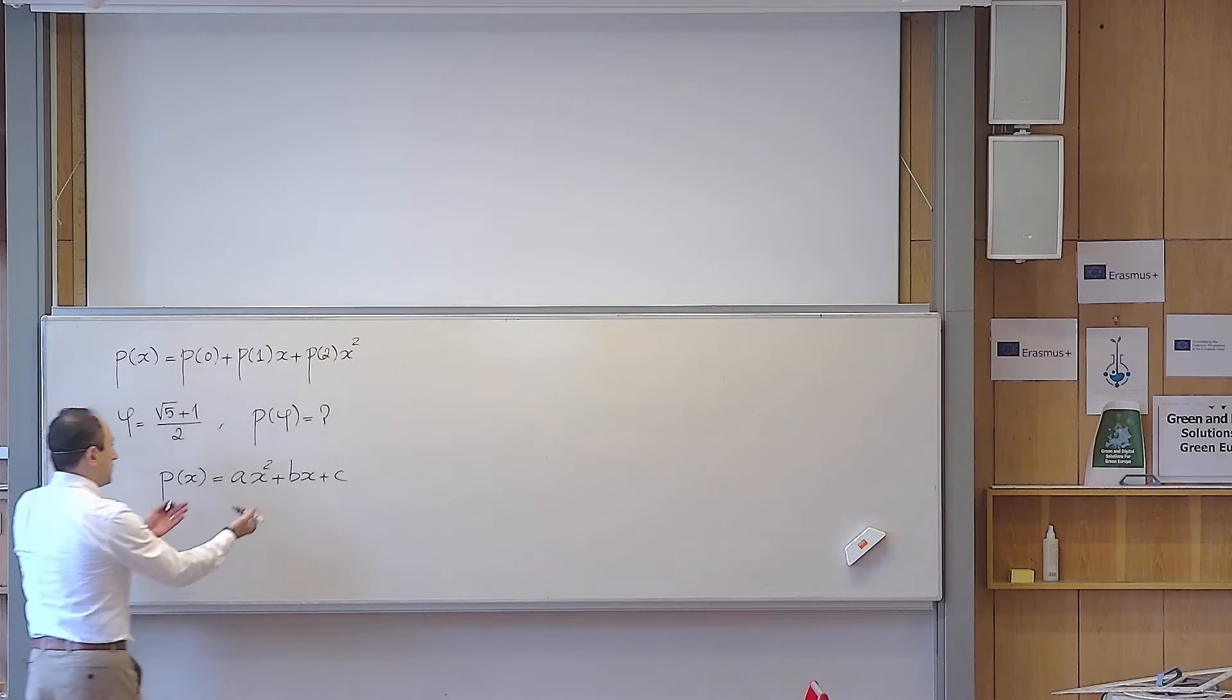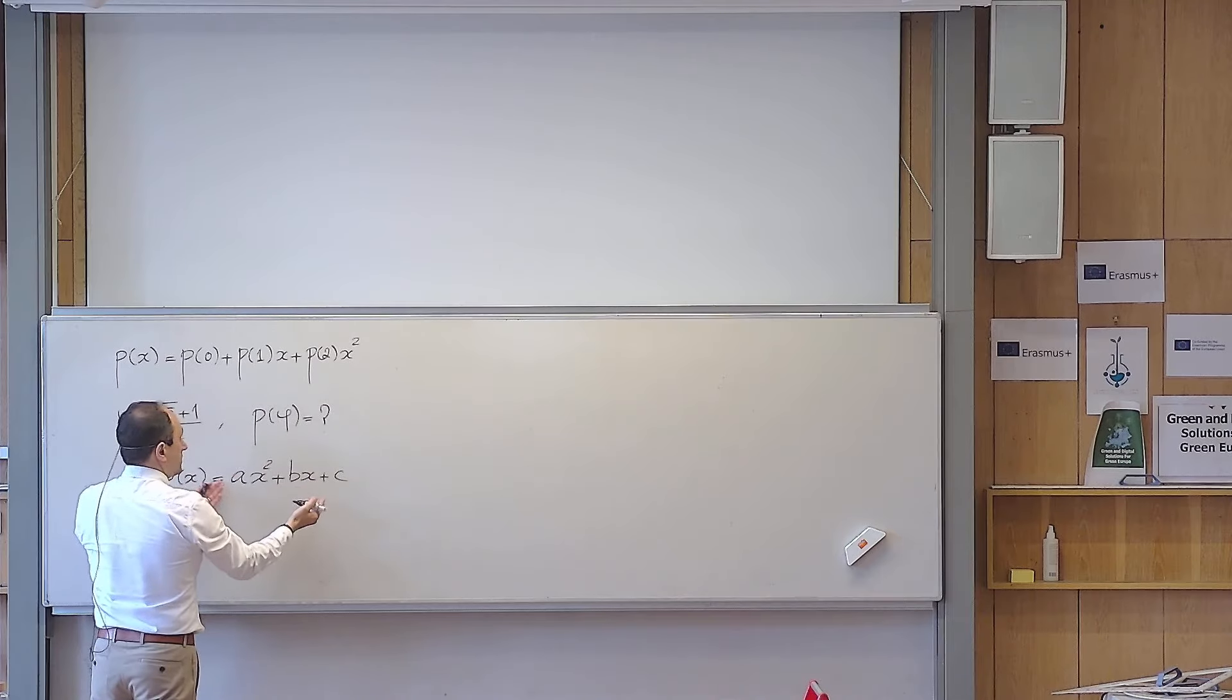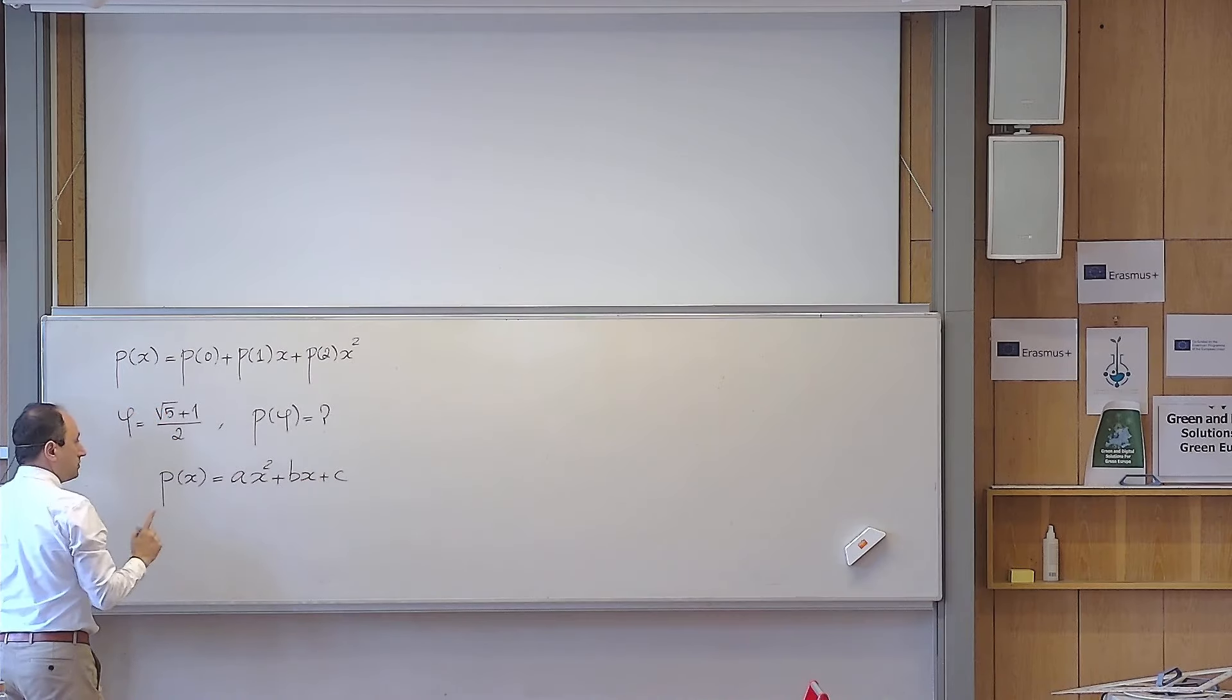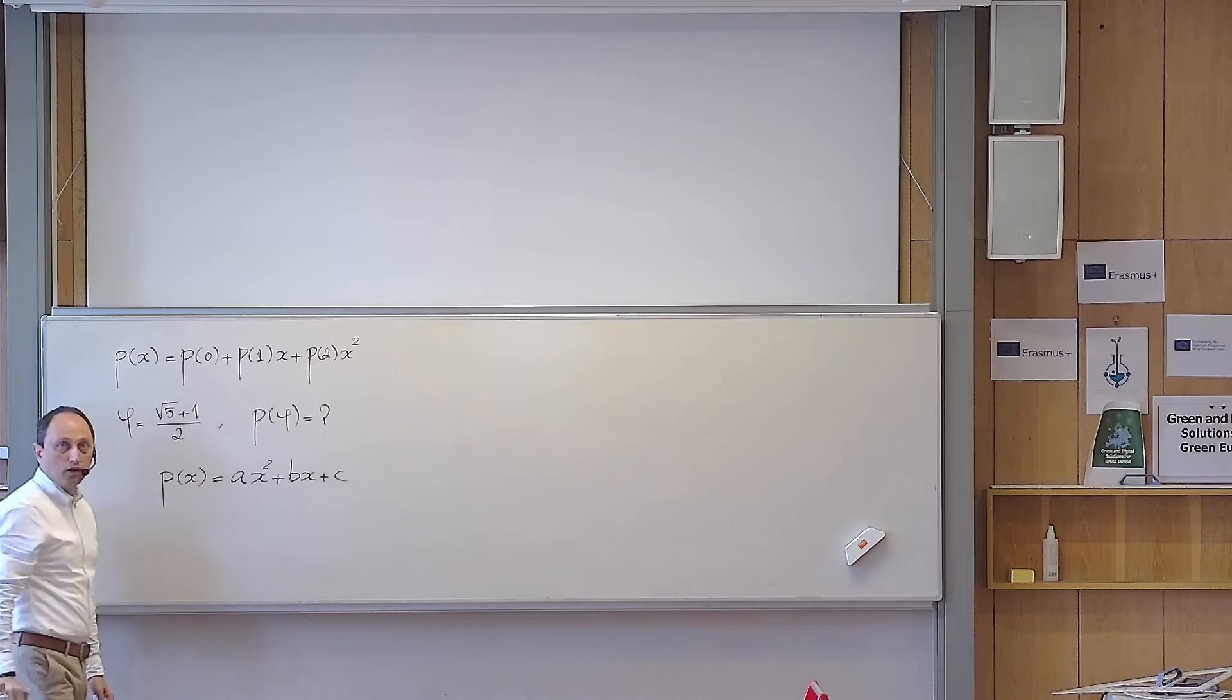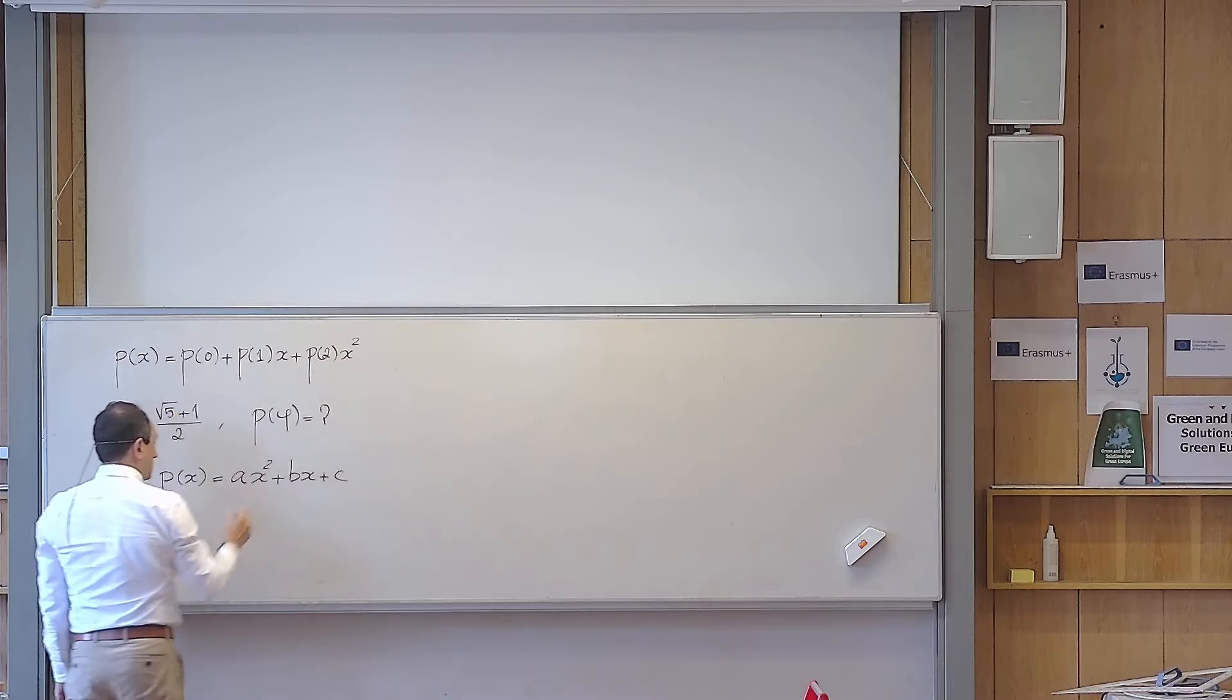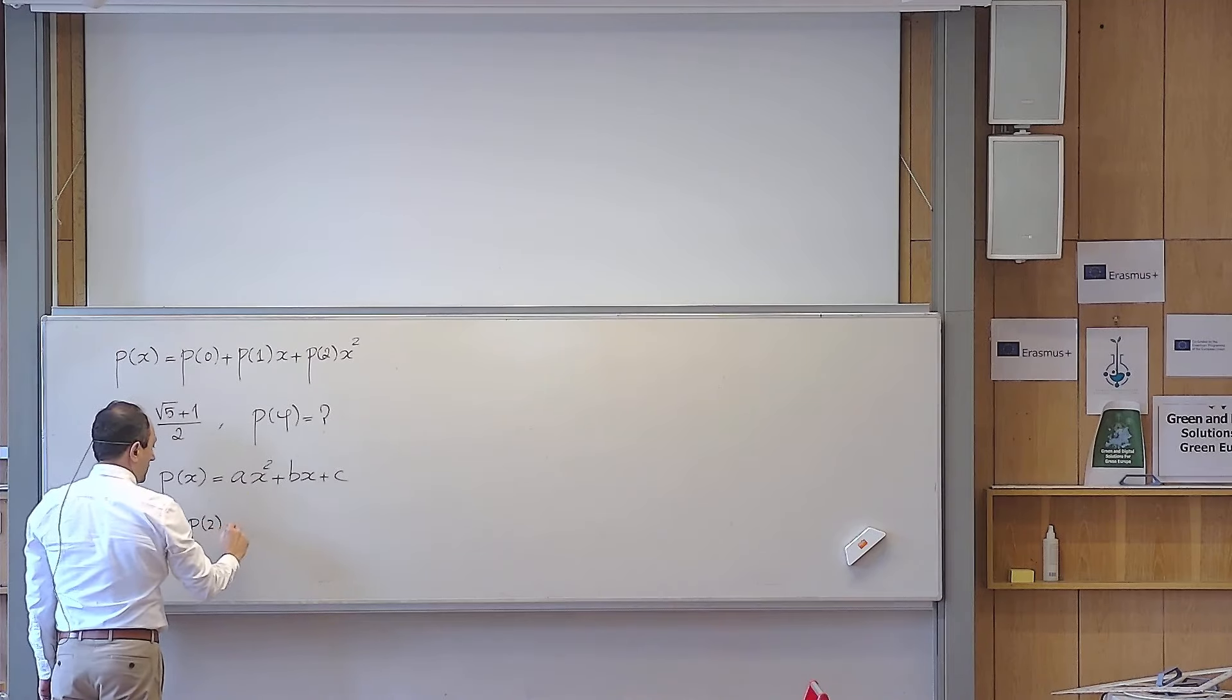Okay, so I put these two equal for all values of x, so I want to make this identical to this. So it means that the coefficient of x squared should match with the coefficient of x squared there. So what does it mean? It means that the coefficient of x squared, which is P(2), is supposed to be equal to a.